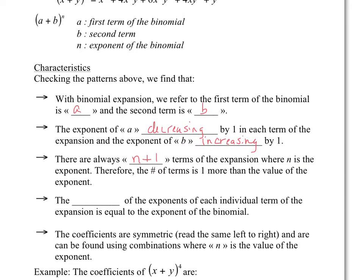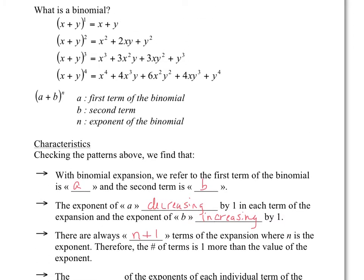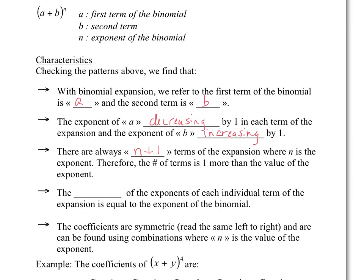The sum of the exponents of each term is equal to the exponent of the binomial. For example, if you add exponents 3 and 1, it gives you 4; 2 and 2 gives 4; 1 and 3 gives 4. And the sum of the exponents of each term is always equal to the exponent of the binomial.